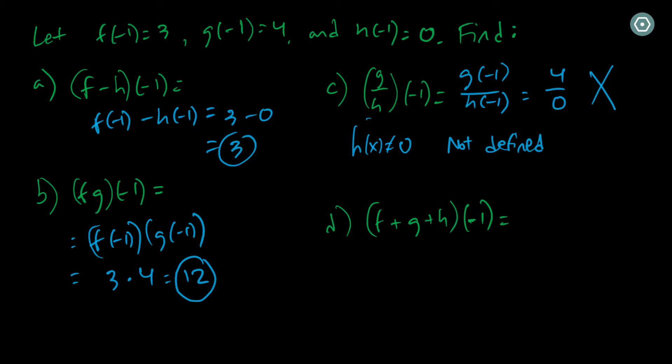Now for part d, we have f plus g plus h of negative 1. So that's a function that is composed of adding all three f, g, and h functions together. This is still a function though. And its output, when you plug in negative 1, should simply be f of negative 1 plus g of negative 1 plus h of negative 1. So that's going to be 3 plus 4 plus 0, and I get 7 as a result.